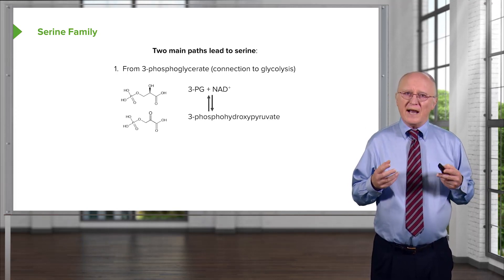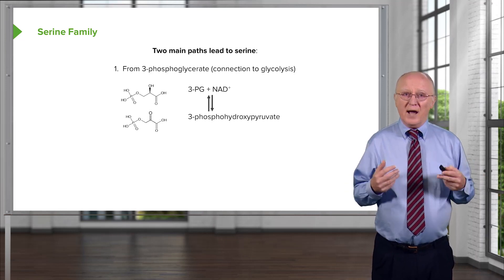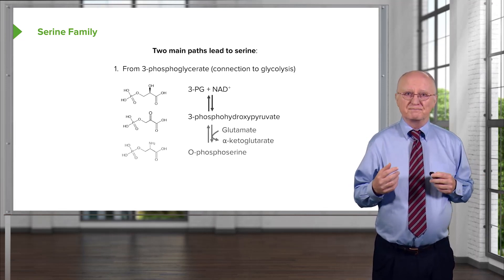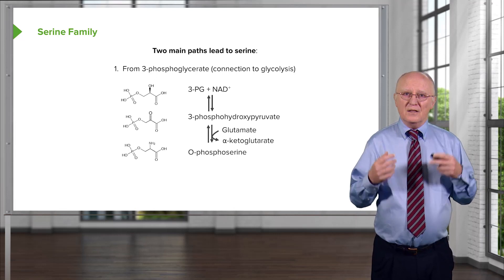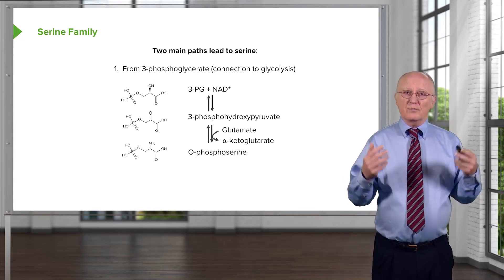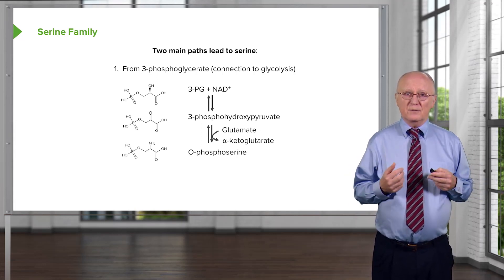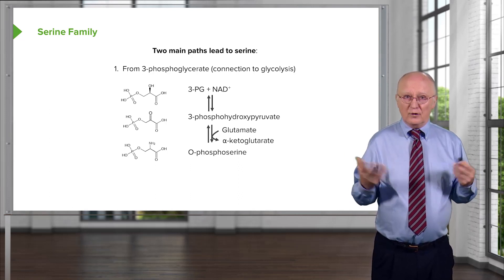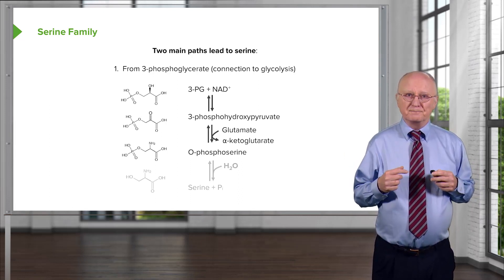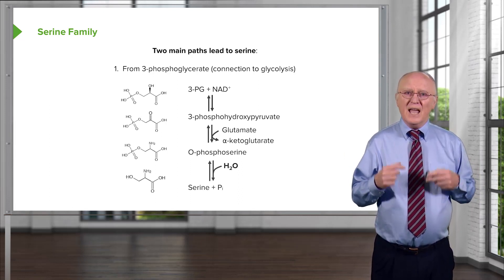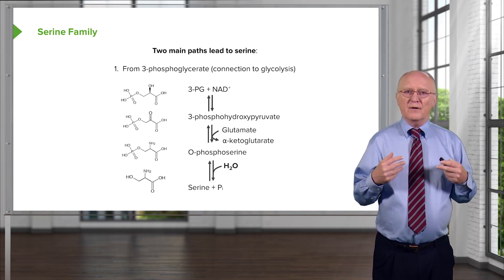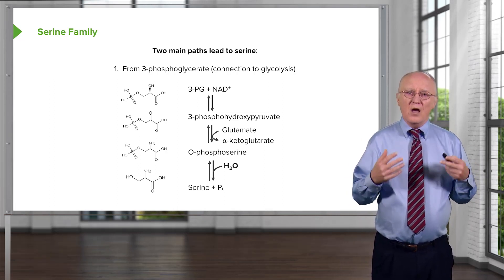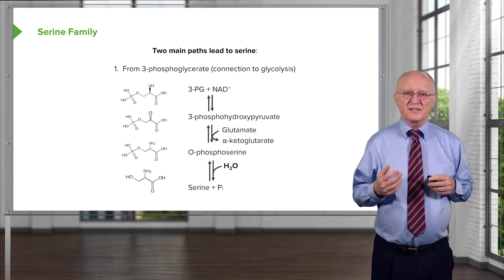In this reaction, 3-phosphohydroxypyruvate is produced as a result of that oxidation. The transamination of 3-phosphohydroxypyruvate leads to O-phosphoserine, as we can see here. And the removal of phosphate from O-phosphoserine results in the production of the amino acid serine.